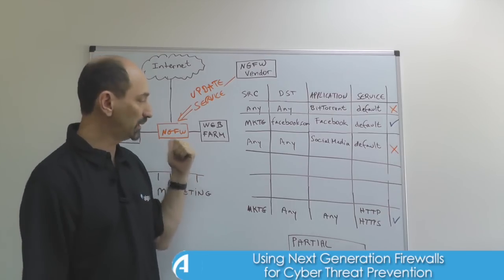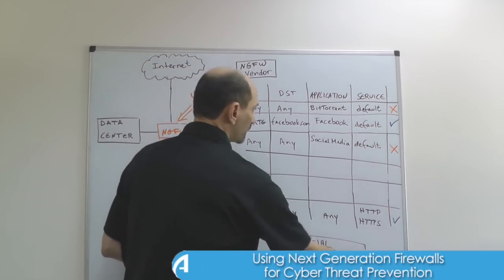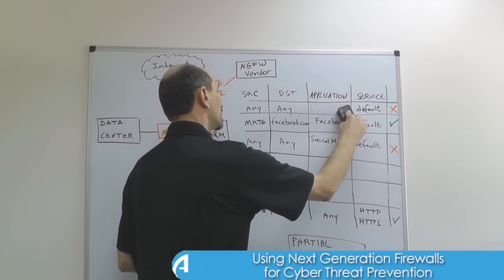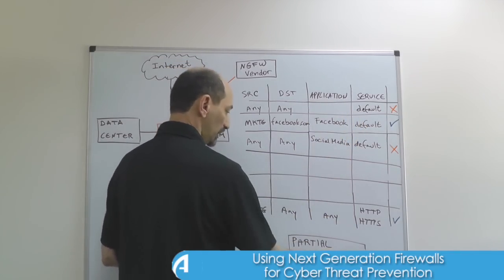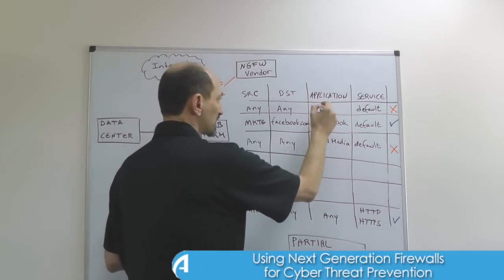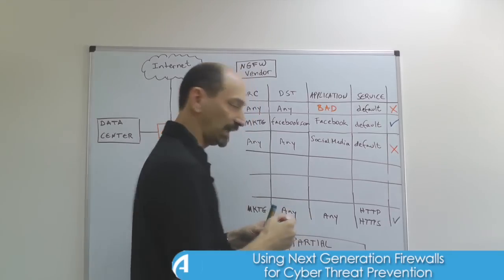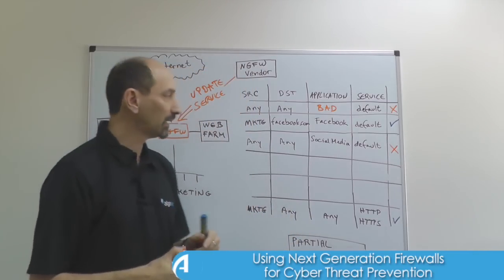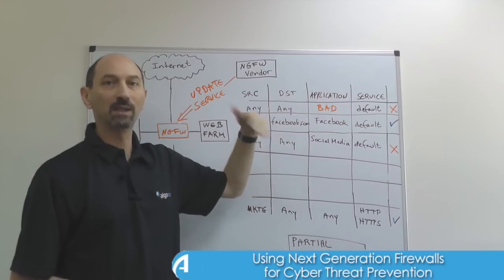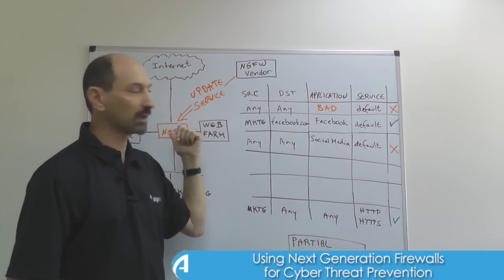Furthermore, instead of requiring you to keep track of individual threats, you could also get a categorization. So instead of listing individual bad applications one by one, you could just specify a broad category name — like "bad" — and then that category would keep getting updated by the vendor all the time.